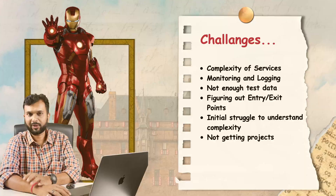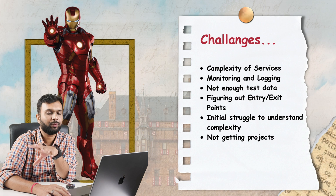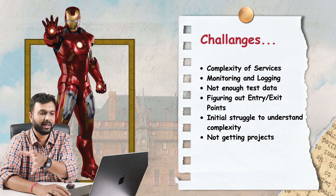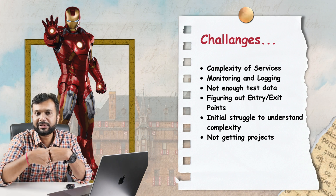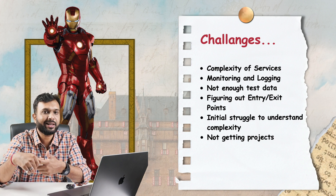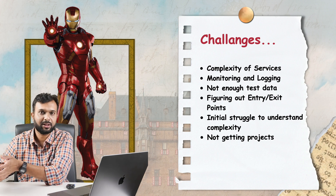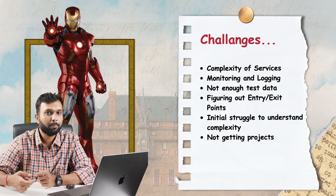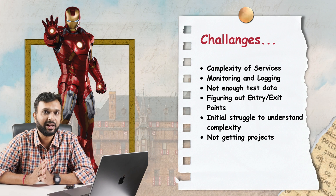Challenges of backend automation: first is the complexity of services — you need to understand the full complexity of the end-to-end architecture before you can start building automation. Monitoring and logging is tricky — for example with AWS SNS, if you send data you get a message ID but don't know if data was actually delivered. You need a listener like SQS or Lambda and validate via CloudWatch. Not having enough test data is another huge challenge.